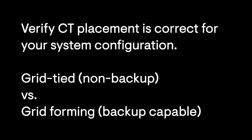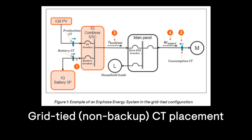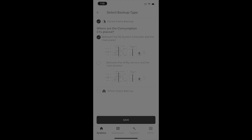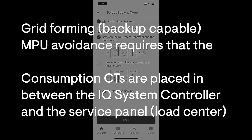Verify that the CTs are installed in the correct location as needed for your system configuration. Grid-tied, non-backup sites differ from grid-forming, backup-equipped-capable systems. In this example, we will review a grid-forming backup-capable system, starting with Main Panel Upgrade Avoidance as our objective.